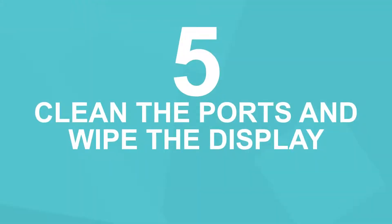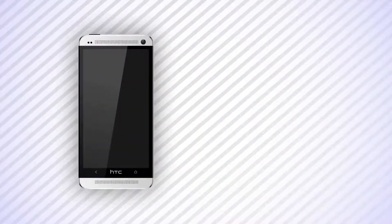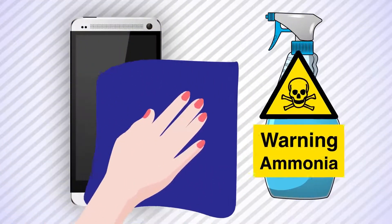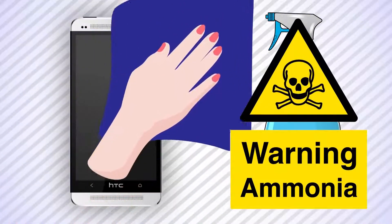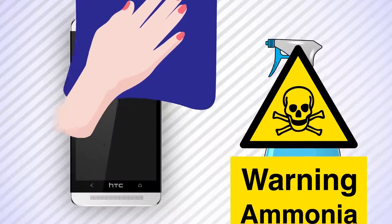Number 5. Clean the ports and wipe the display. Because most of the modern cell phones have touch screens, we touch them all the time. That's why they get pretty dirty over time. To wipe the screen, use lint-free wipers and whatever you do, never use window cleaning liquids. They contain ammonia, which can damage the screen irrevocably.